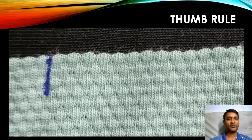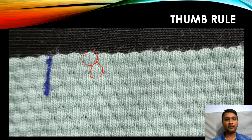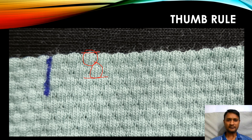Before we start our analysis, let's see the repeat. This is actually a popcorn structure, and it is aligned diagonally. So to get one complete repeat, we need to unravel from here to here, and we may need to unravel more number of courses to get one complete repeat of a popcorn jersey fabric.